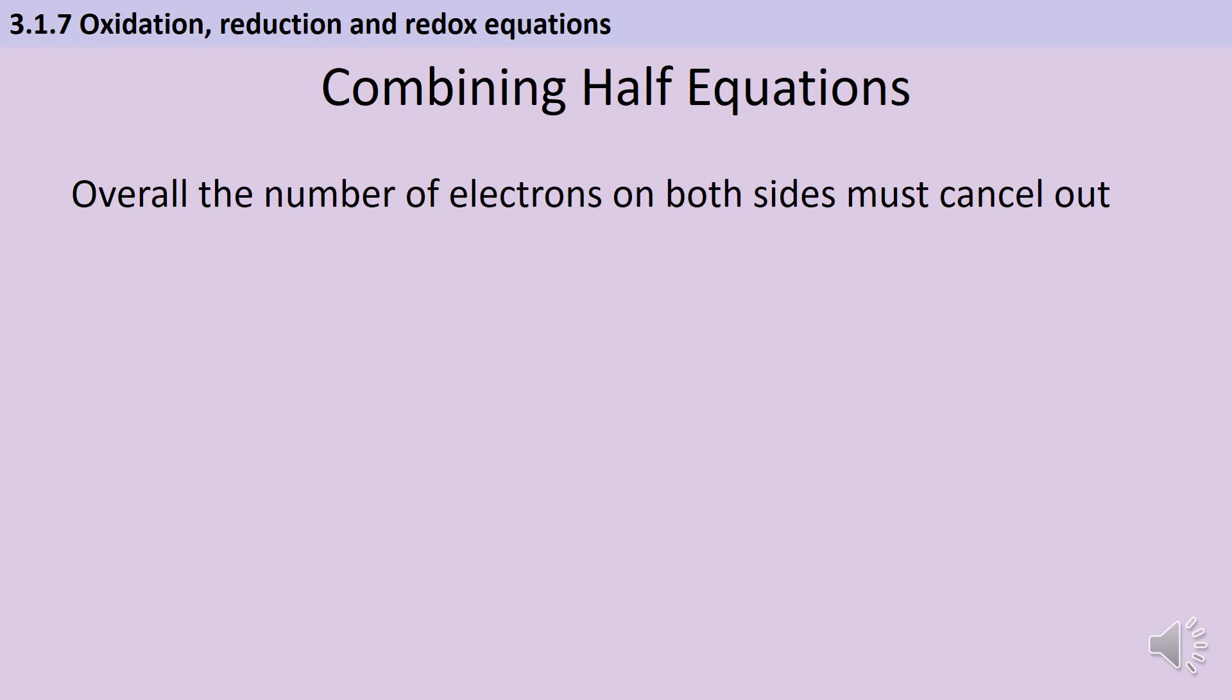Once we have half equations for each part of a chemical reaction we can start combining these to make an overall redox equation. And the key thing here is that the electrons in your two half equations have to balance so that they can cancel out. So our overall redox equation is going to be an ionic equation and it's not going to include any electrons.